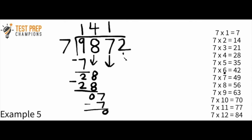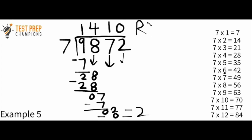Now I pull that 2 down. How many times does 7 go into 2? 7 goes into 2 zero times. 7 times 0 is 0, so I do a subtraction: 2 minus 0 is just 2. We're left with a remainder of 2, and that is our correct answer.